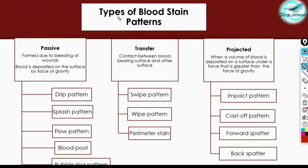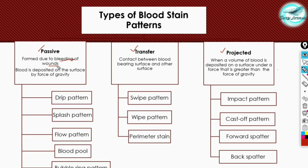This is a flowchart showing the types of blood stain patterns. Blood stain patterns are mainly divided into three types: passive, transfer, and projected blood stain patterns. Passive blood stain patterns are usually formed due to the bleeding of wounds — all injuries that lead to a flow of blood. Blood is deposited on the surface by the force of gravity.